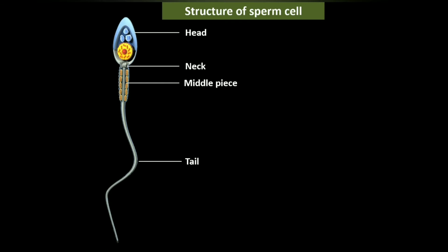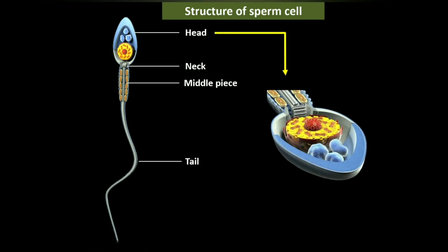The head is oval, which allows the sperm to penetrate the egg. The head contains a large nucleus with densely coiled chromatin fibers. The head also has an enzyme-filled vesicle called the acrosomal region, which covers about two-thirds of the head.